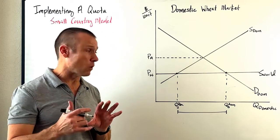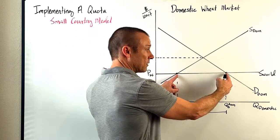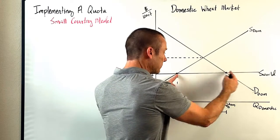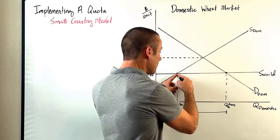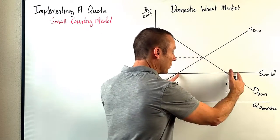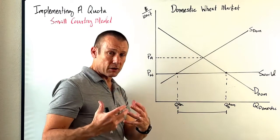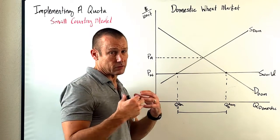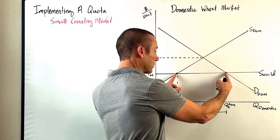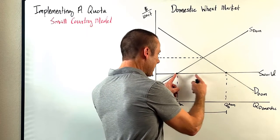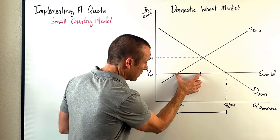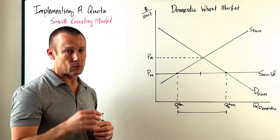This is how much the imports are right now. If they set their quota at an amount larger than the current amount of imports, that would be a non-binding quota — it would have no impact on the market whatsoever; they would only import the current amount. But of course we're going to do a binding quota, just like the same reason we do binding ceilings and binding floors with price controls. So the quota is going to be less — we can make it any amount — let's just pick right here. That's going to be our quota amount: the amount of imports we're going to let in.